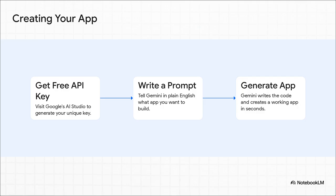Step one: you just pop over to Google's AI Studio and grab your free key. Step two: you write a sentence — just a simple, plain English sentence describing the app you want to build. And then step three: you just sit back and watch. Gemini literally writes all the code and builds a working app for you, right there, in seconds.